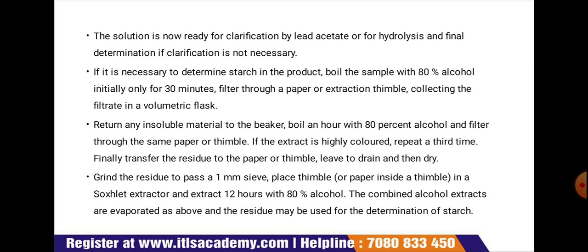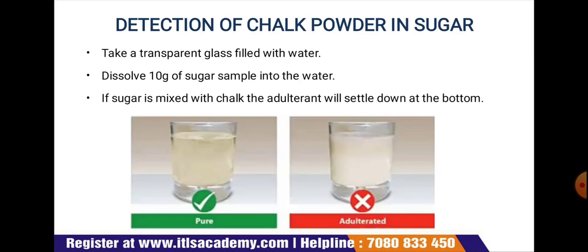The next test is the detection of chalk powder in sugar. Take a transparent glass filled with water and dissolve approximately 10 grams of the sugar sample into the water. If sugar is mixed with chalk, the adulterant will settle down at the bottom.